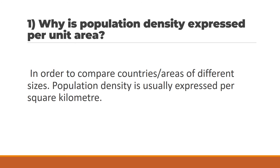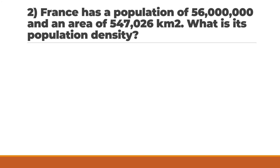Question 1: Why is population density expressed per unit area? In order to compare countries or areas of different sizes, population density is usually expressed per square kilometre. Question 2: France has a population of 56 million and an area of 547,026 square kilometres.